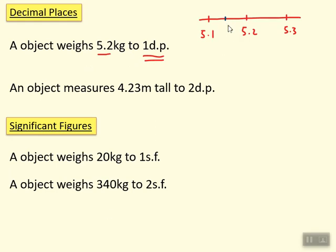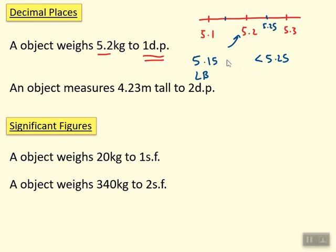Halfway between 5.1 and 5.2 is 5.15 — that's the smallest number that would round up to 5.2, so that's the lower bound. Halfway between 5.2 and 5.3 is 5.25, and that would be the upper bound — but remember we use a less than sign there because technically 5.25 would round up to 5.3. So 5.15 is the lower bound and 5.25 is the upper bound, using the inequality to say it's slightly less than 5.25. Now let me show you a really easy trick to find the upper and lower bound.